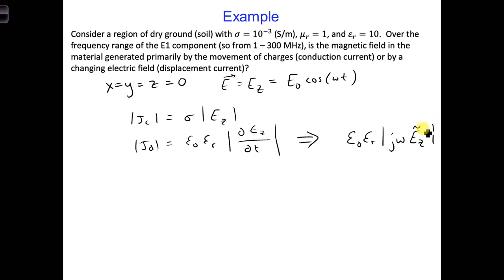And that is the phasor. So the magnitude of j is 1, so you get epsilon naught epsilon r omega and the amplitude of e, which is actually just e naught. And then when we convert the other conduction current density, we can write that as sigma and e naught. So here is our Fourier transform.